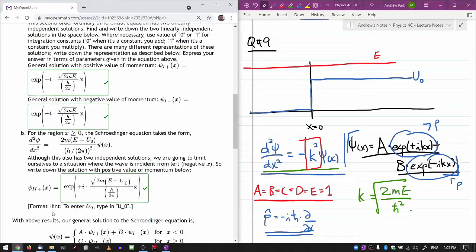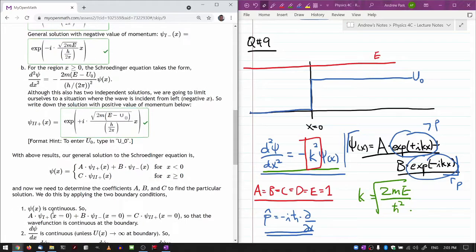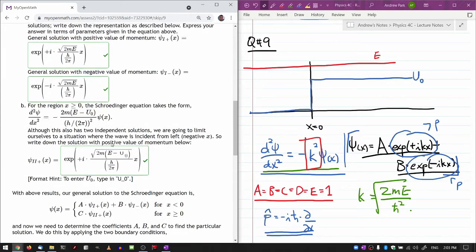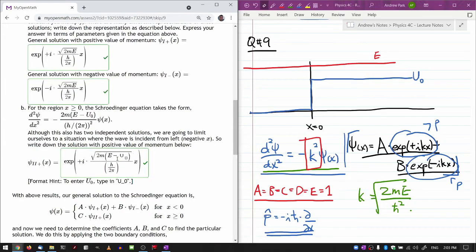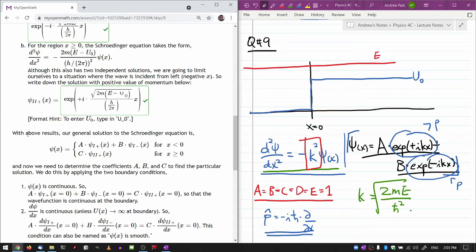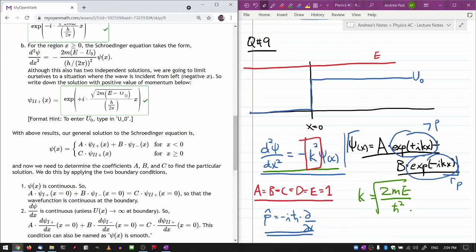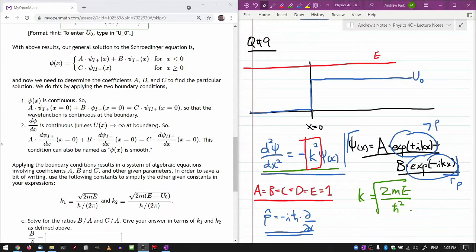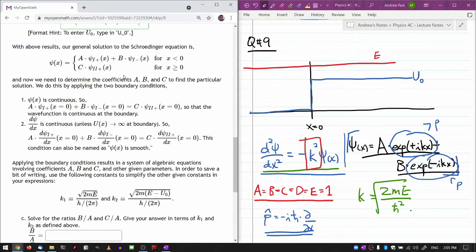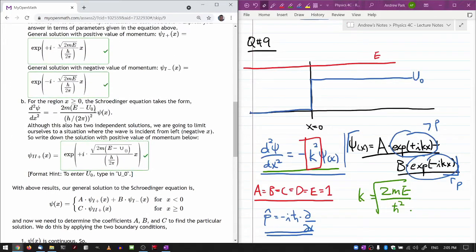For the region x greater than zero on the right hand side, the Schrödinger equation takes the form this. If you carefully compare a and b, really nothing much has changed because E was positive and E minus u naught is also positive. So in terms of qualitative features of solution, nothing much has changed. When you write down the solution with the positive value of momentum, that's just gonna be basically this solution with E replaced by E minus u naught. If you don't know how to type in u naught this way, then there's the equation palette. Let me submit this and see. Correct answers.